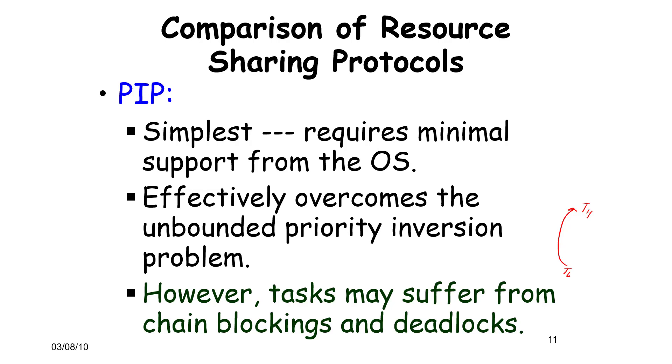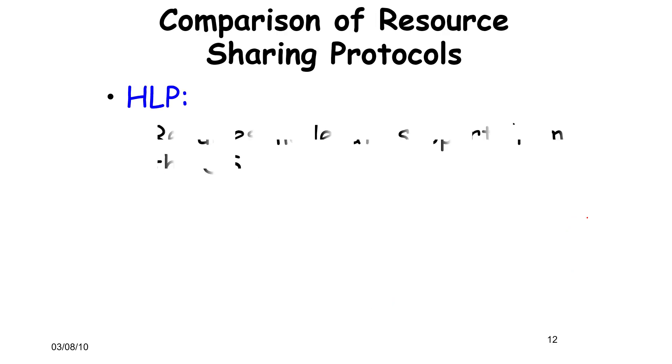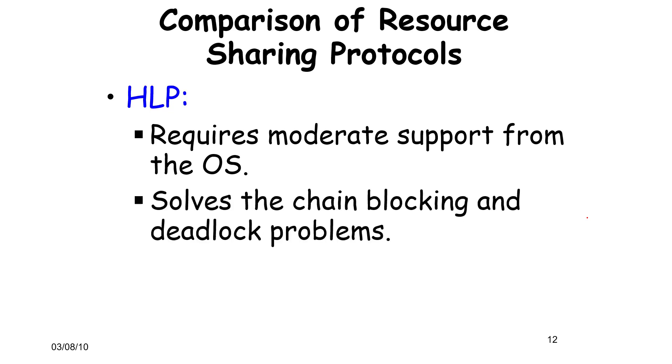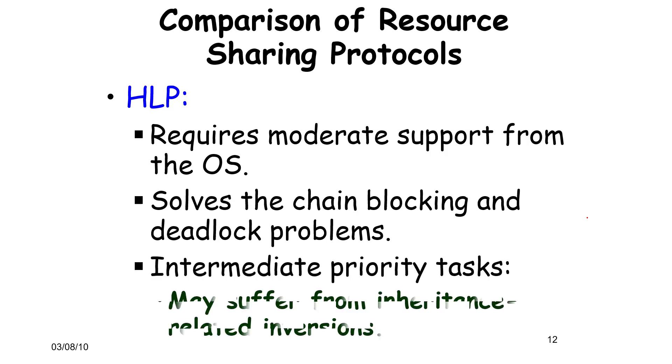HLP requires some support from the OS to maintain ceilings and so on. It solves the chain blocking and deadlock problems, but it introduces a new problem which is that intermediate priority tasks may suffer from more priority related inversions because the priority is raised to unrealistically high levels.